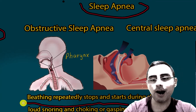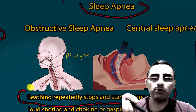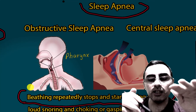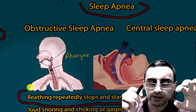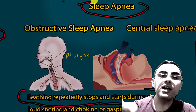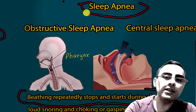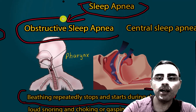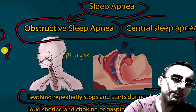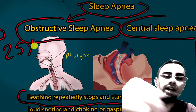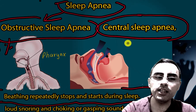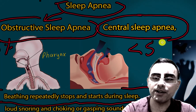Another common cause of sleeping sounds is sleep apnea. The main characteristic of sleep apnea is that breathing repeatedly stops and starts during sleep. Sleep apnea has two types: obstructive sleep apnea and central sleep apnea. Obstructive is more common, occurring in about 25% of the population, while central sleep apnea occurs in less than 5%.